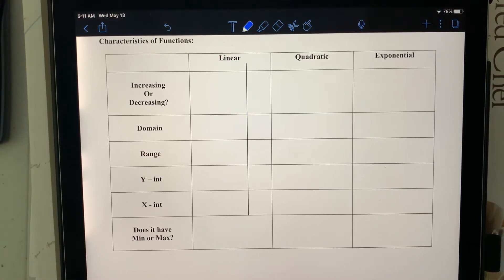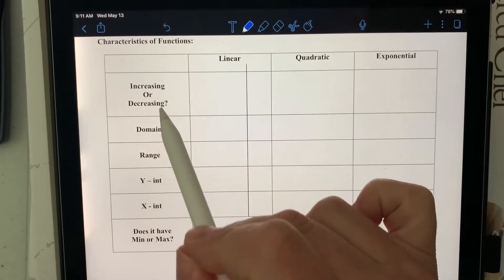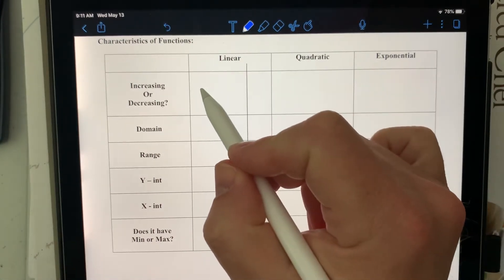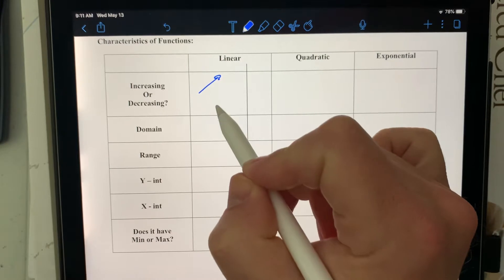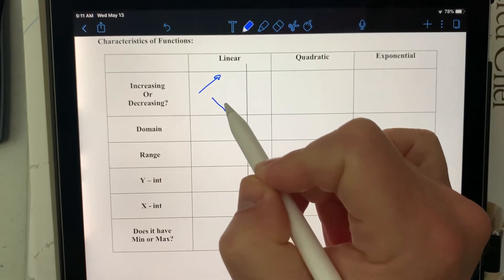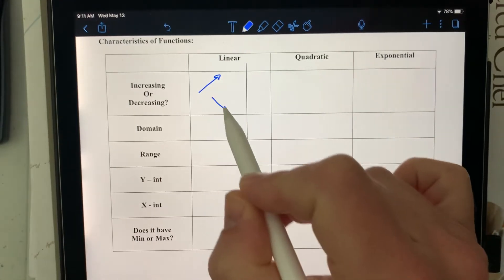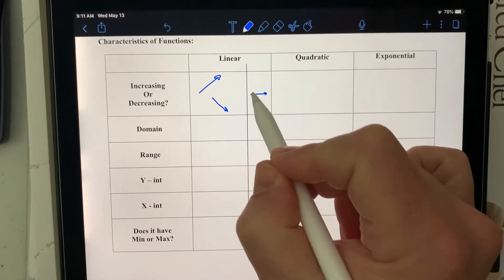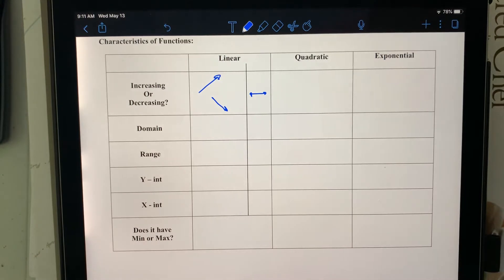Okay, let's look at the characteristics of the functions. If it's linear, is it increasing or decreasing? Well, it's only either or, so it's always going up or always going down, either increasing or decreasing. But there's one exception, and that is a horizontal line. A horizontal line just doesn't go up, it doesn't go down.